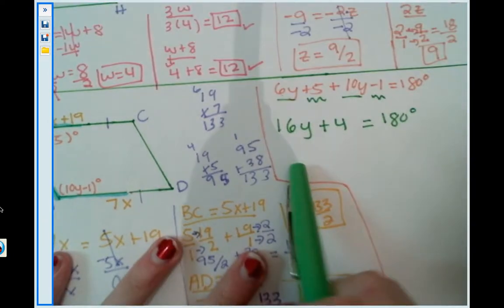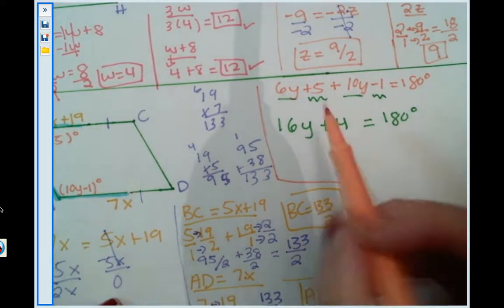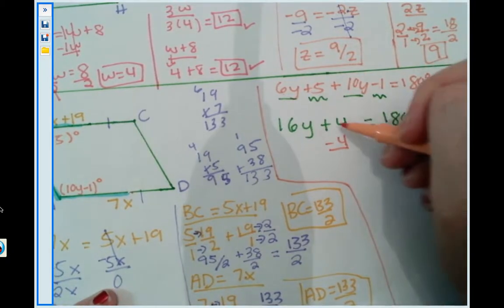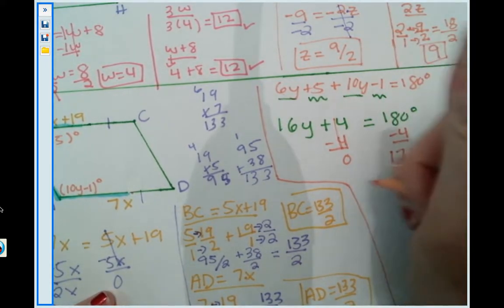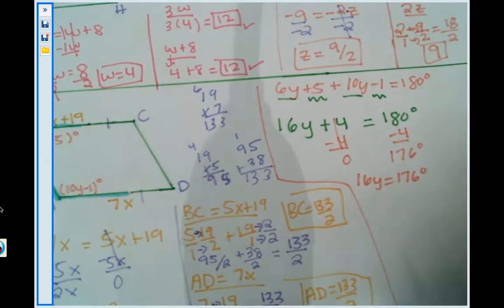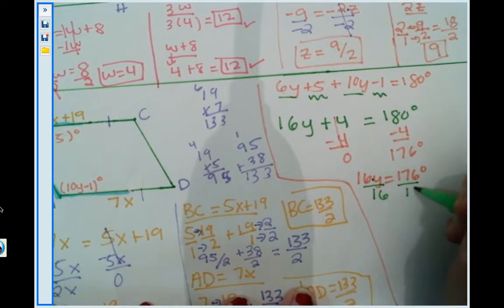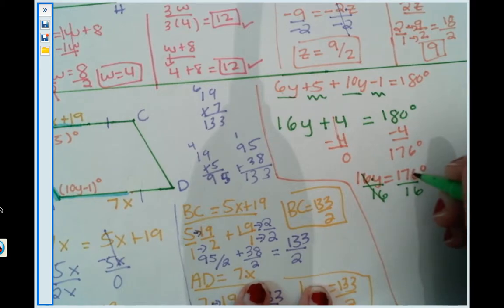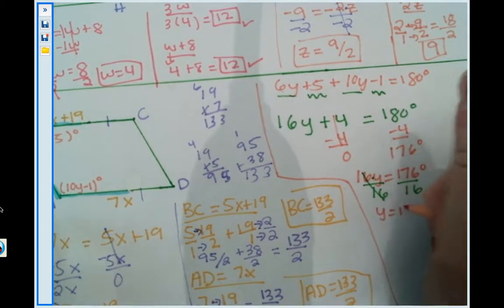So now I must get this y on one side by itself. So I must move the 4 to the other side. So the way we move 4 to the other side, since it's positive, I'm going to subtract that thing on both sides. 4 minus 4 cancels and turns to 0. 180 minus 4 gives me 176. So now we have 16y equals 176. And how do we move 16 to the other side? Well, it secretly is multiplying to the y. So the way we move it to the other side is by dividing that thing on both sides. Which 16 divided by 16 cancels and turns to 1. And 176 divided by 16 is 11. So y is 11.